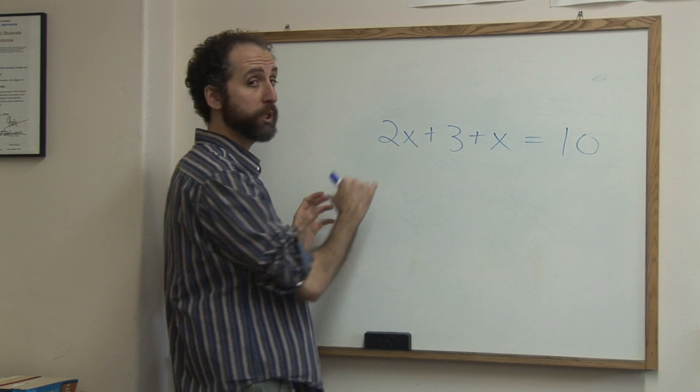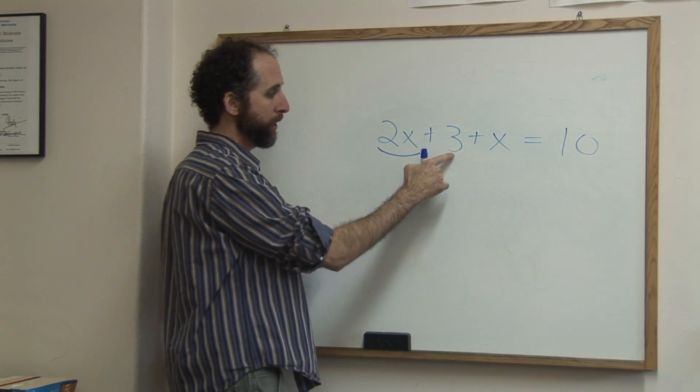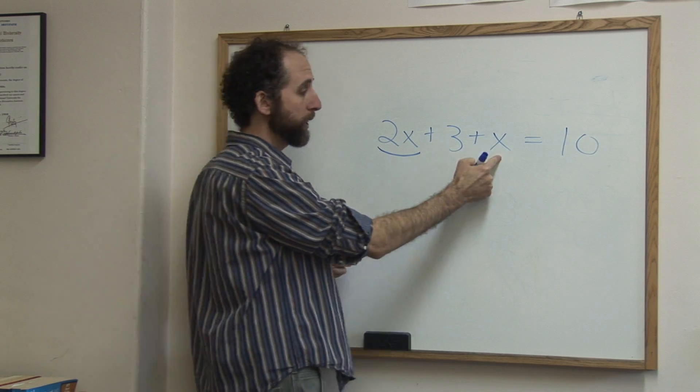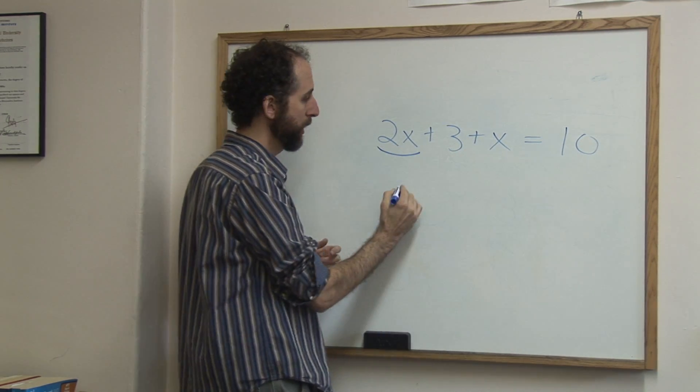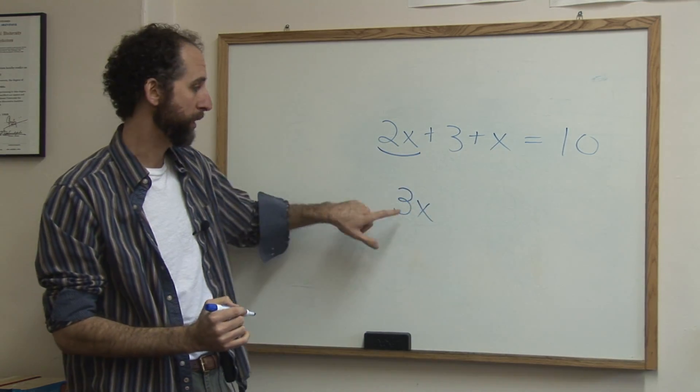So first thing we want to do is collect like terms. So 2x is not a like term with 3, but it is a like term with x. So 2x plus x is 3x. You've got two apples plus one apple, you've got three apples.